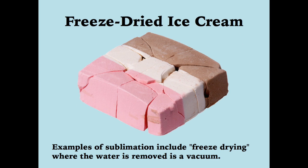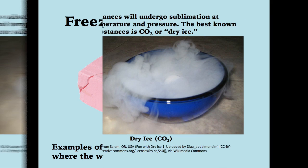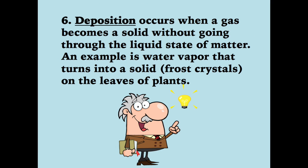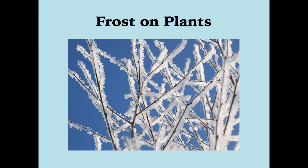Freeze-dried ice cream is an example of sublimation, because the water is removed in a vacuum. A few substances will undergo sublimation under normal temperature and pressure — an example is dry ice, or CO2. Deposition occurs when a gas becomes a solid without going through the liquid state of matter. An example is water vapor that turns into frost crystals on the leaves of plants, as you can see here.